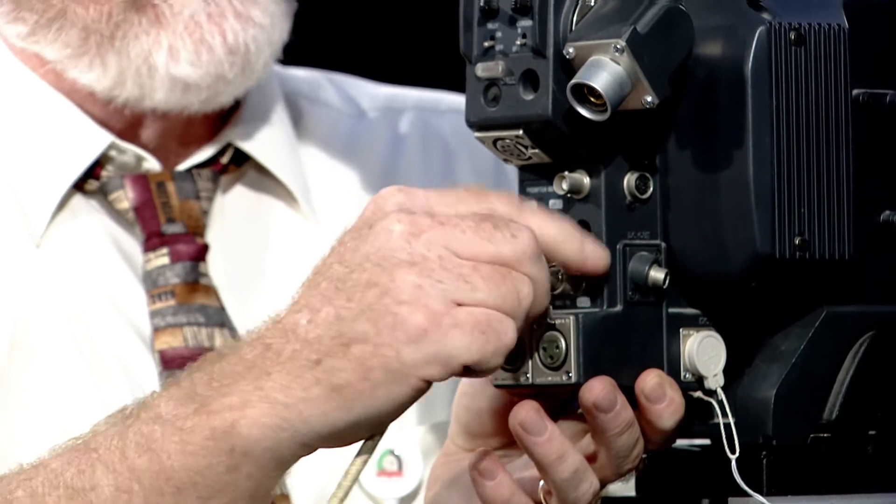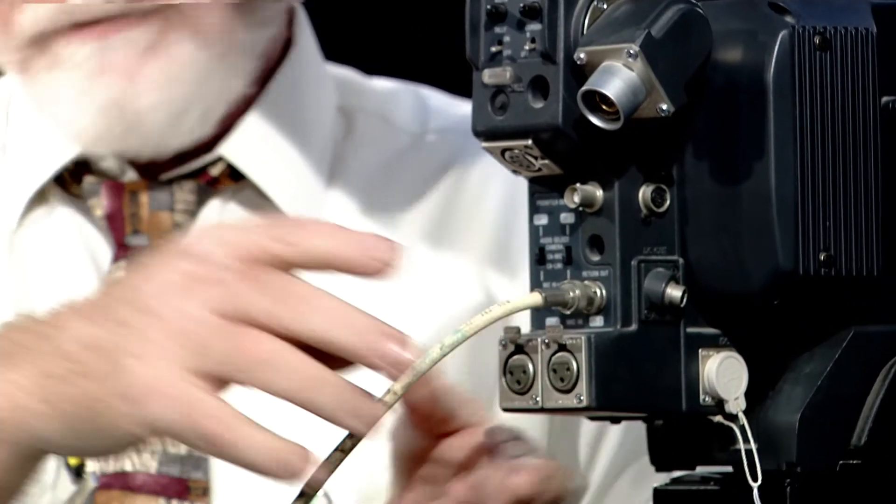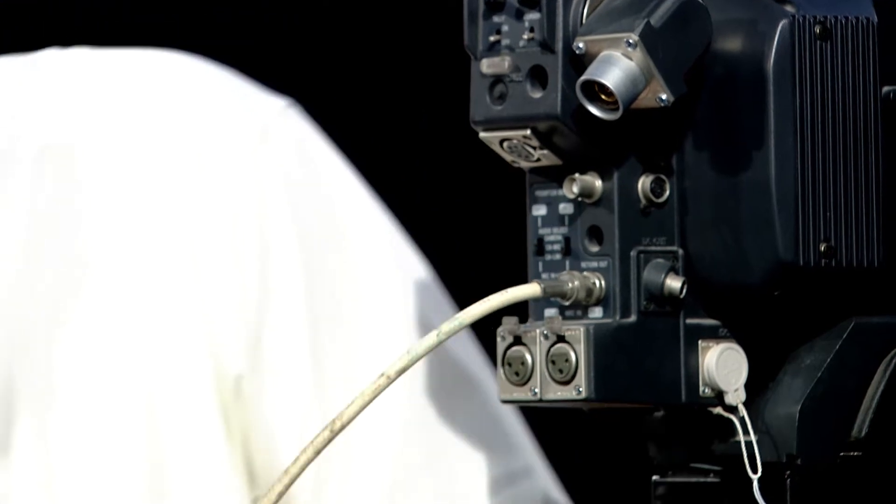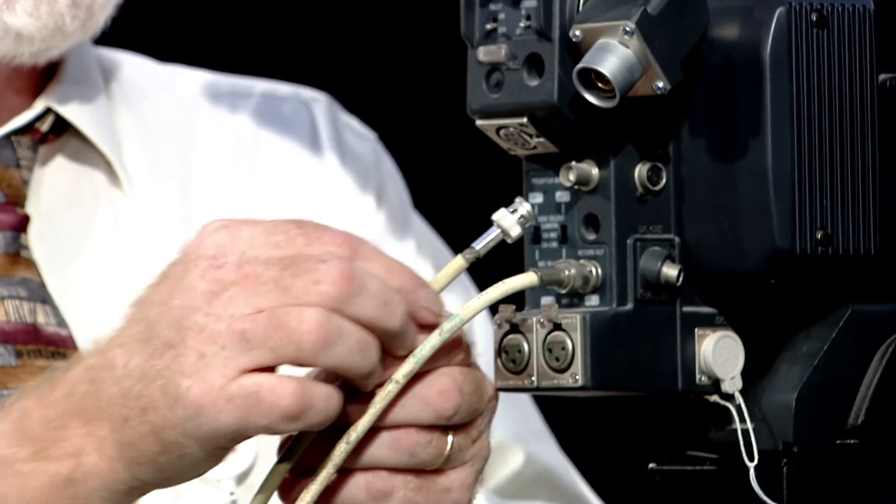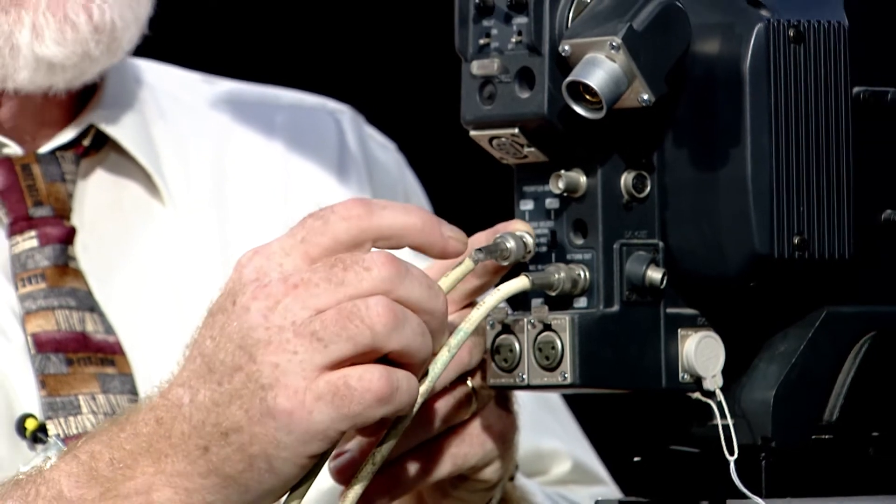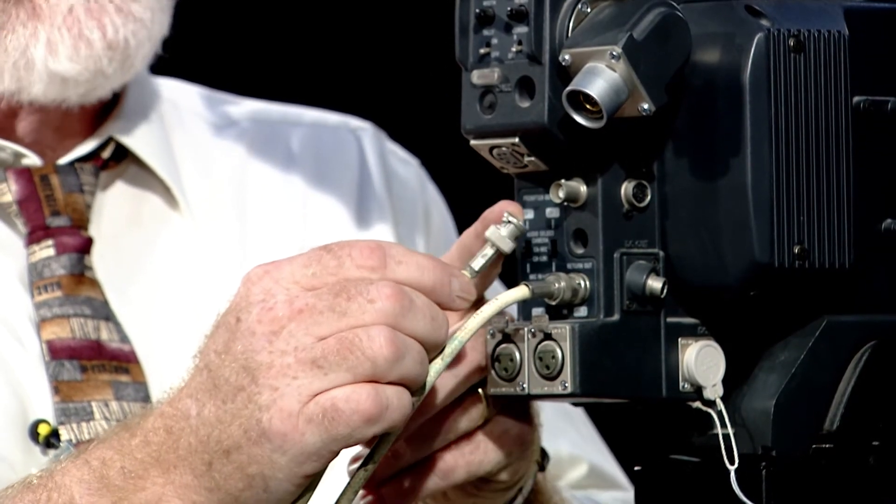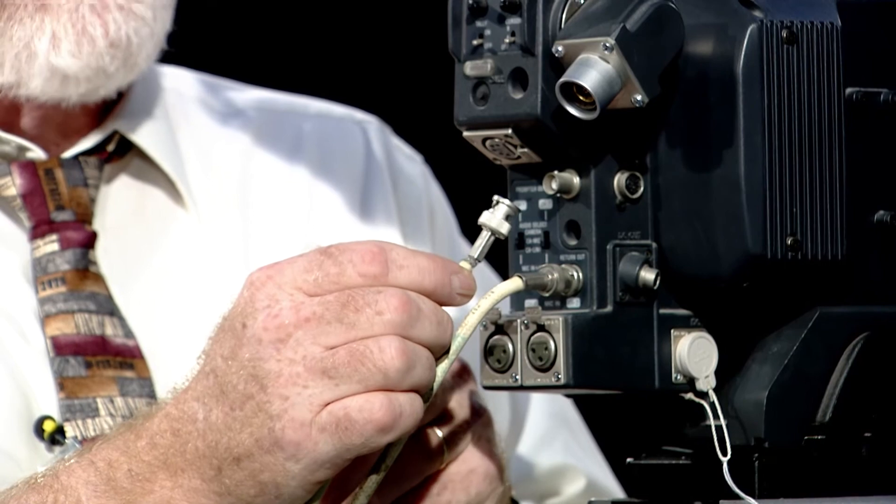So what happens if you take this and pull real hard? I will show you. What will happen is you will fray the shield, and it will look similar to this. And you'll see the shield being exposed. The cable may still work, but it probably will give you a poor signal.